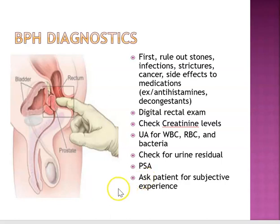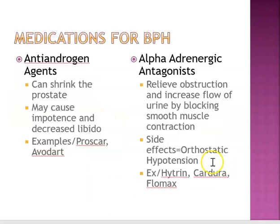Treatment for BPH is determined by the severity of manifestations and the presence of complications. If it's mild they might just monitor over time; if more severe, they'll intervene. Anti-androgens are medications used to shrink the prostate. They may cause impotence and decrease libido over time. Examples are Proscar and Avodart. They're only effective if the prostate is about 40 mL or greater in size.